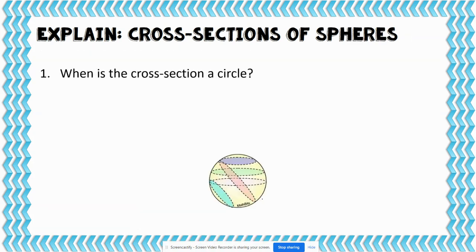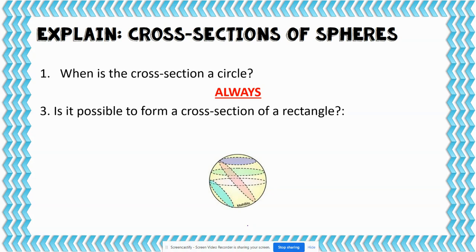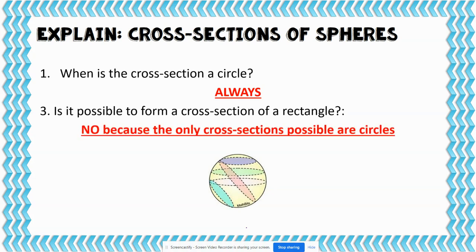For spheres, the cross-section is always a circle. No matter how you cut it, it doesn't matter — these are always circles because no matter where you cut a sphere, it is a perfect circle. It is never possible to form a cross-section of a rectangle, a triangle, or even an ellipse, because the only cross-section possible is a circle.